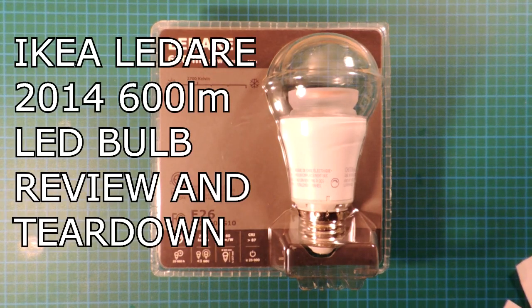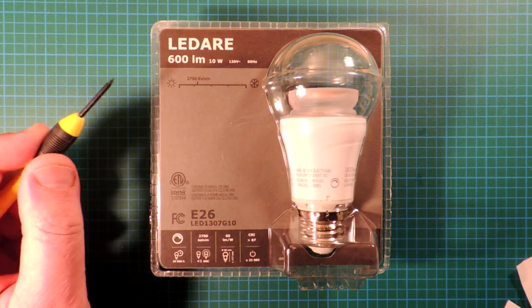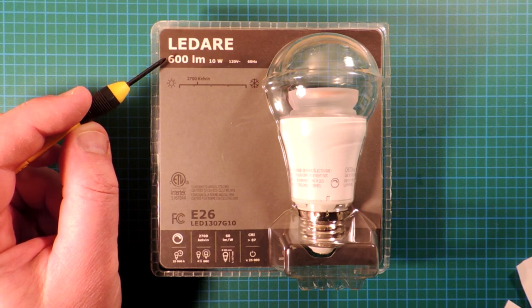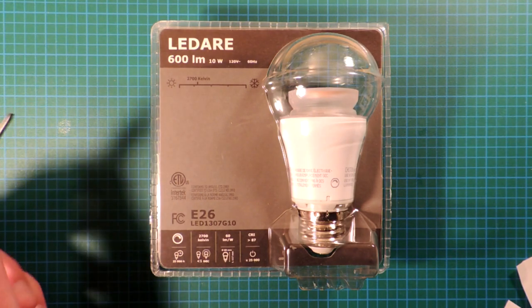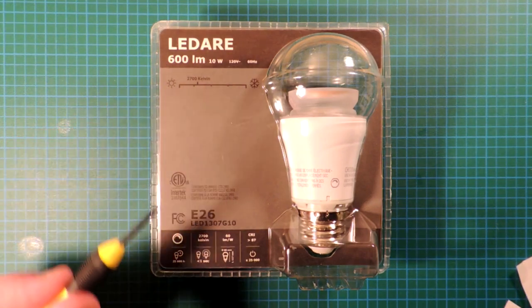LED light bulb review time. This is Ikea's Lidaire for 2014. Just like the previous bulb I tore down from Ikea, they're definitely doing something different in terms of their positioning. They're doing a 600 lumen bulb. For the most part, the industry seems to have settled on 400 and 800 as the break points, so it's a bit unusual.